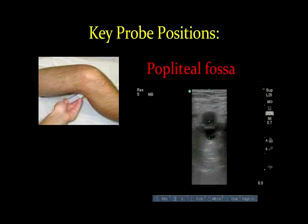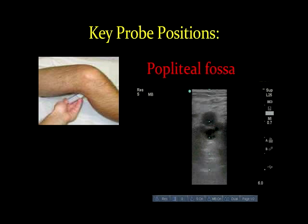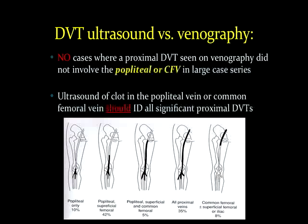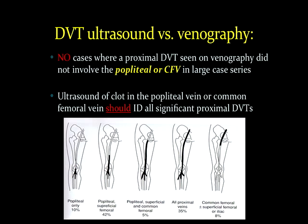Typically, when you see an ultrasound technologist performing a DVT ultrasound examination, you'll see them marching down the entire length of the femoral vein. So why two-point compression? In the ICU, not only do we not have the time to do this, but the evidence does not support needing to do this.